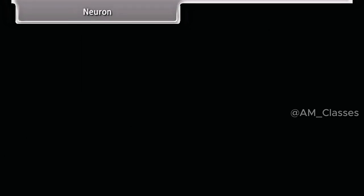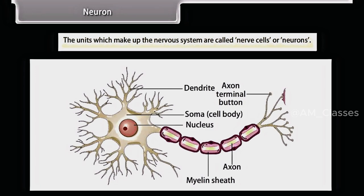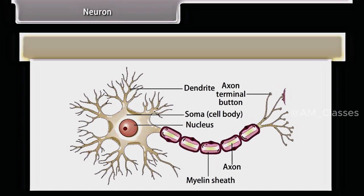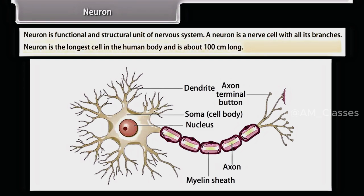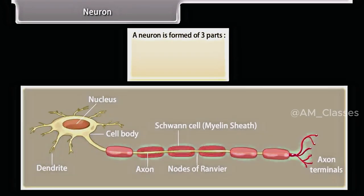The units which make up the nervous system are called nerve cells or neurons. A neuron is a functional and structural unit of the nervous system — it is a nerve cell with all its branches. Neurons are the longest cells in the human body, about 100 cm long. A neuron is formed of three parts: cytone, dendrites, and axon.